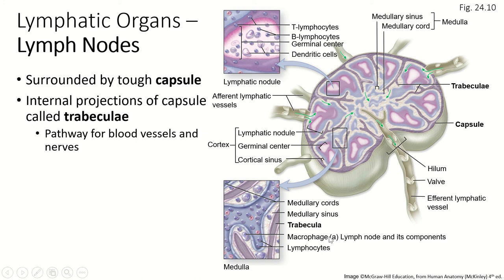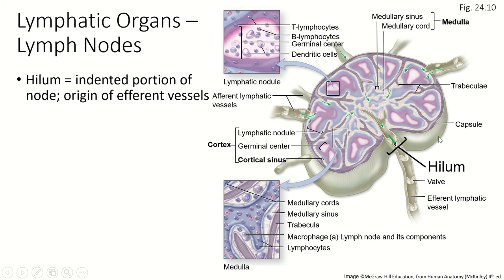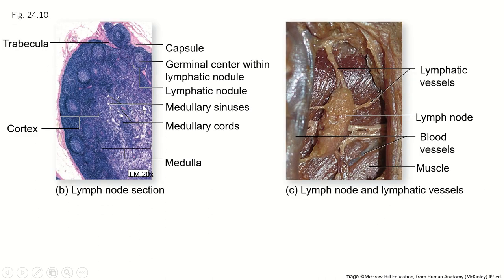Macrophages are really common within the lymph nodes and the nodules like tonsils and MALT, and they engulf foreign particles and break them down. The hilum is the indented area where the efferent vessels leave the lymph nodes. On a microscope slide and in a cadaver, you can see lymphatic vessels going into and out of the lymph node, with the medulla containing germ cells making new cells and the cortex on the outside with lots of different cells performing their function.